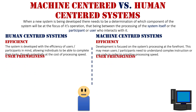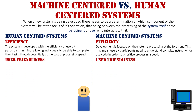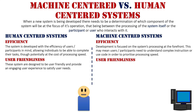The next point is user-friendliness. On the human side, these systems need to be user-friendly and provide an engaging user experience that satisfies the user's needs. Things should be easier to find in the system, with menus and tools that are easily accessible. And if users can't find things, there should be some sort of search or help to allow them to find the tools that will help them do their task.